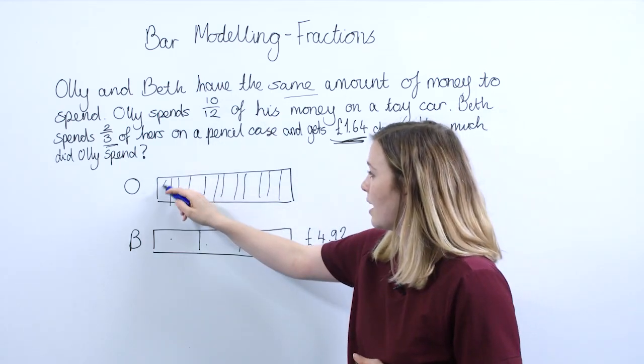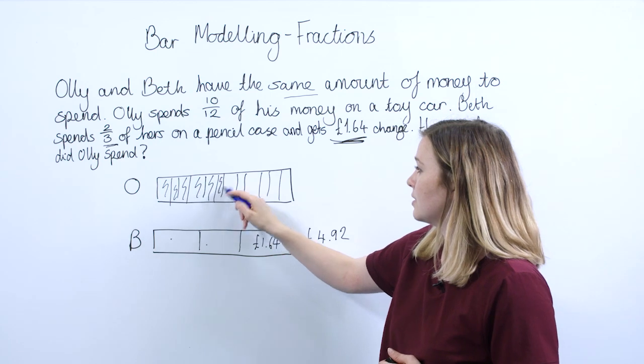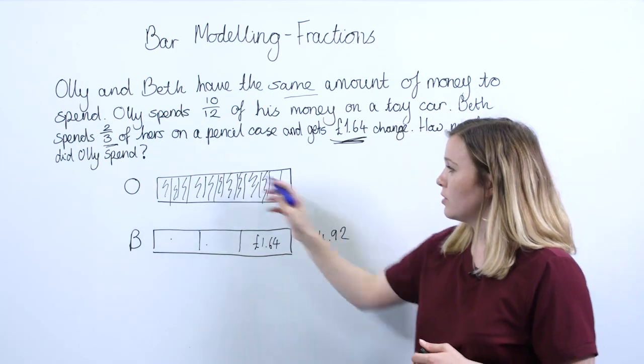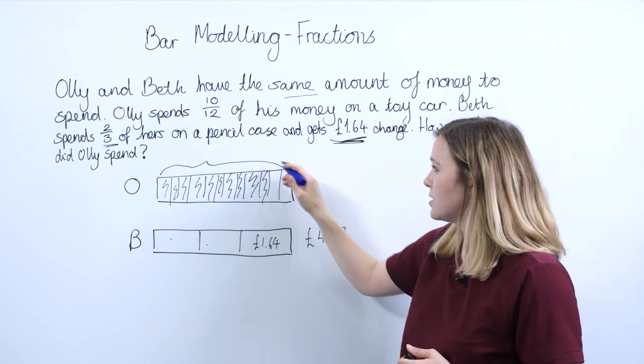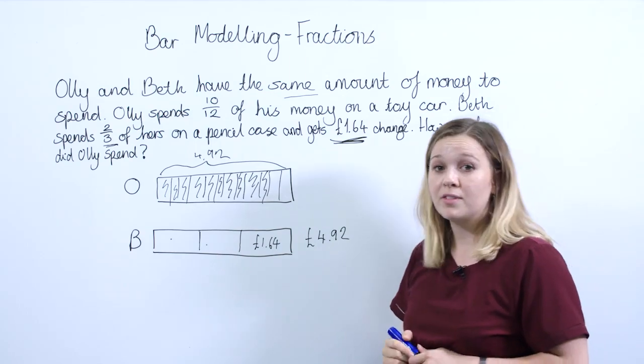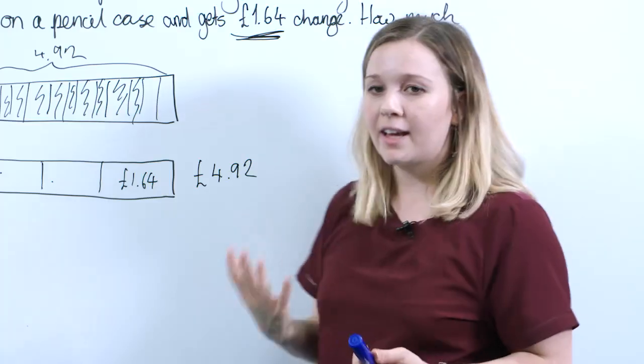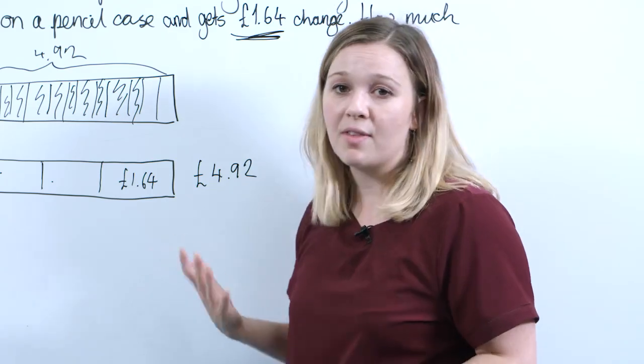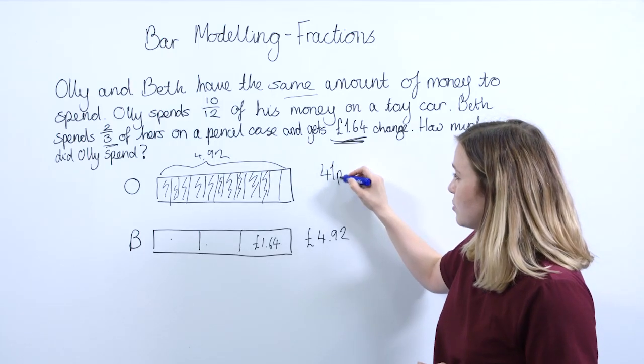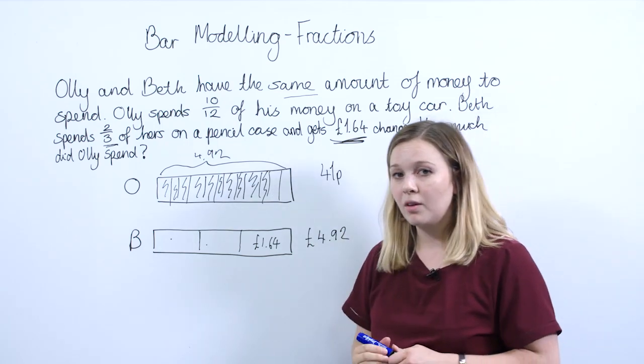So Ollie spent 10/12, so the thing I want to work out is ten lots of each of these. Okay, so I want to do the £4.92, which is the whole thing, divided by 12 to find out how much each of these is. Again, pupils can use a written method to do that or a mental method that they feel comfortable with. So they should get the answer then that each one of those small bits is 41p.